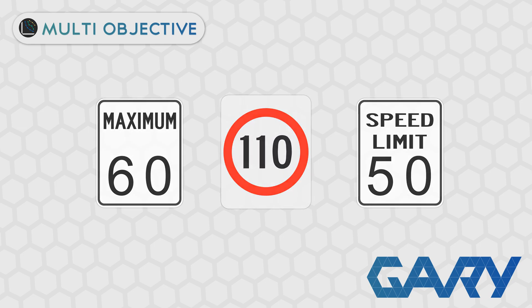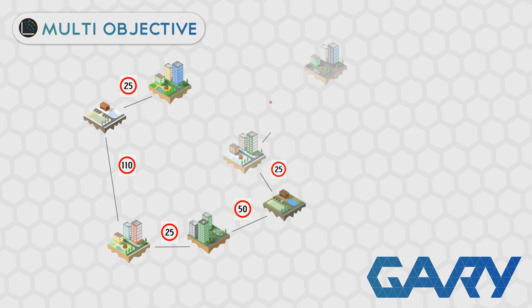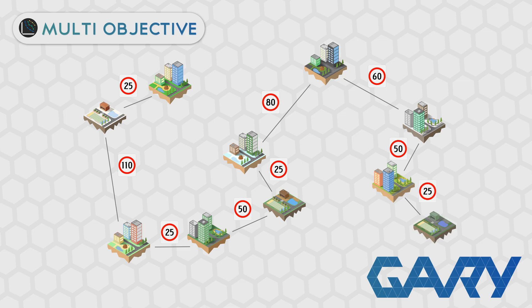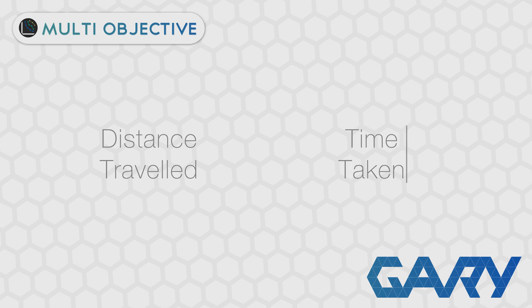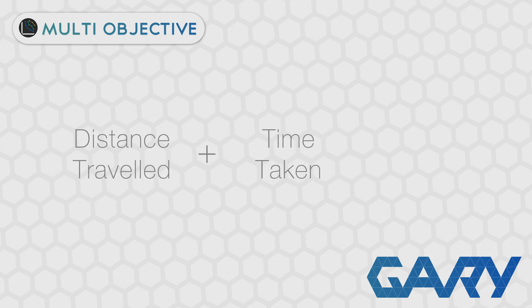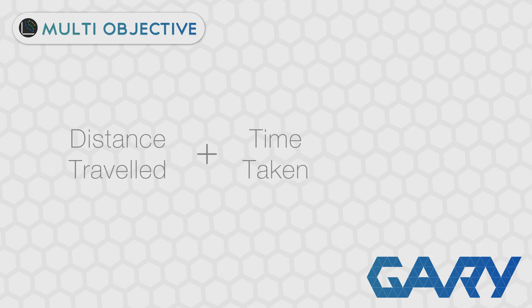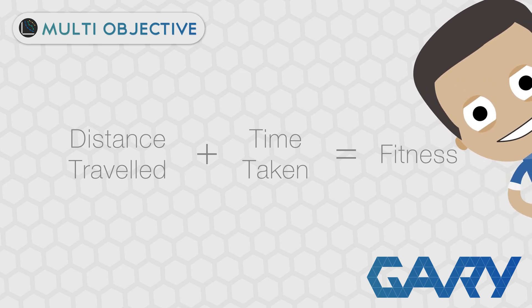But in the real world this isn't the case, because different roads have different speed limits. So we are going to add speed limits to all of our roads. The first solution you might throw out — and this was also my first thought — was: can't you just add trip time to travel distance and that will give you a single value for your fitness? And to that I say: not really.